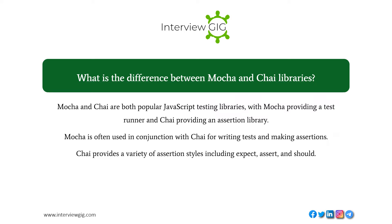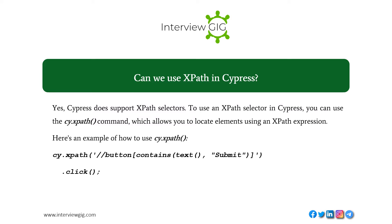What is the difference between Mocha and Chai libraries? Mocha and Chai are both popular JavaScript testing libraries, with Mocha providing a test runner and Chai providing an assertion library. Mocha is often used in conjunction with Chai for writing tests and making assertions. Chai provides a variety of assertion styles including expect, assert, and should.